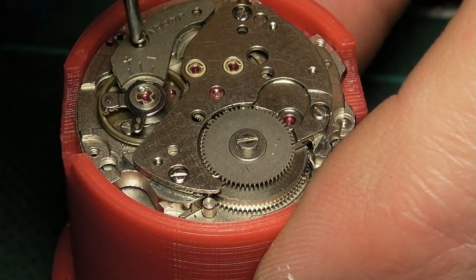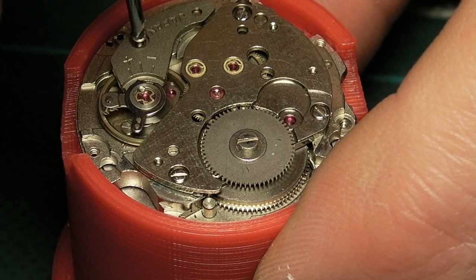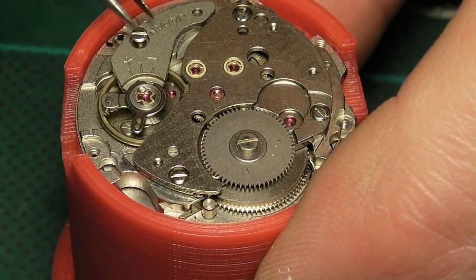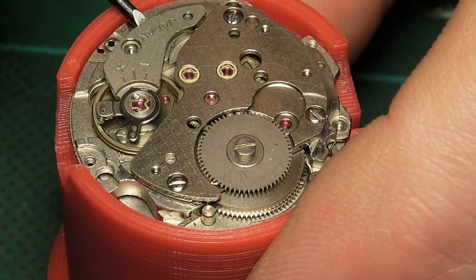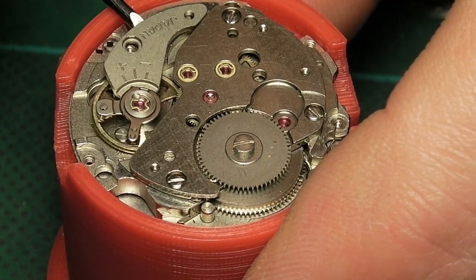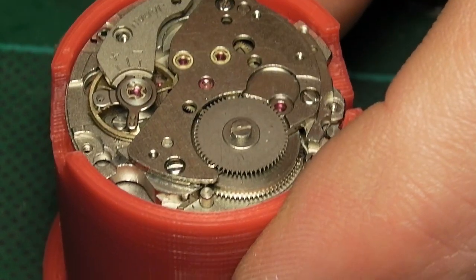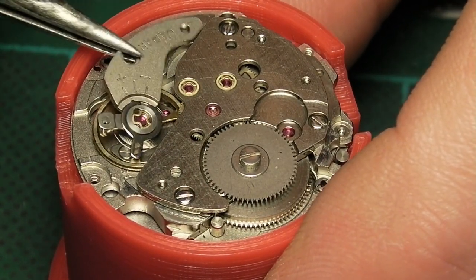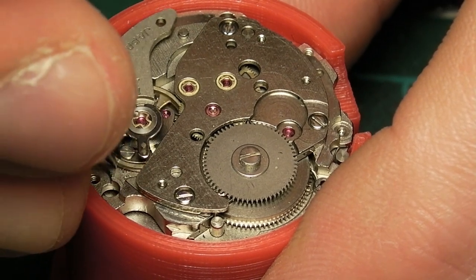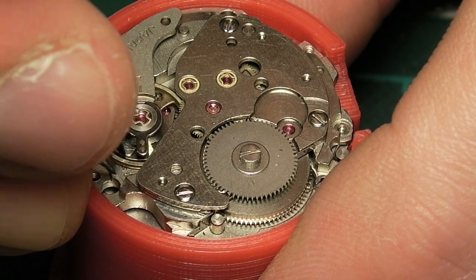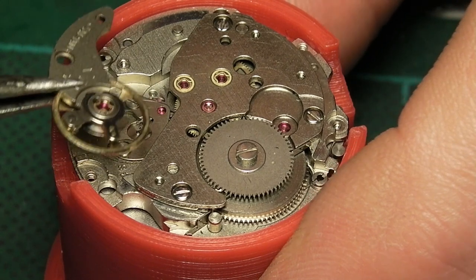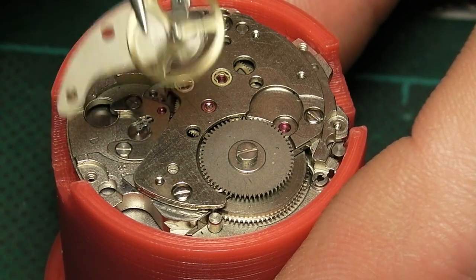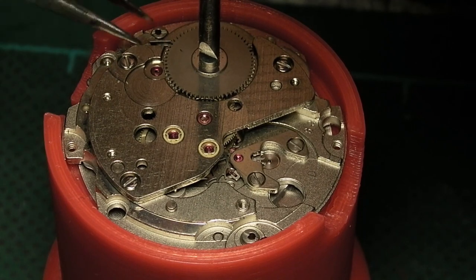Next to be removed is the balance cock and balance complete. I do this before turning the movement over to prevent the delicate pivots and hairspring from being damaged. I like to remove it by wiggling the lower pivot out rather than lift the whole thing up and have it tug out by the balance spring. Here I'm just letting down the spring power.